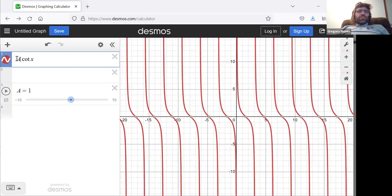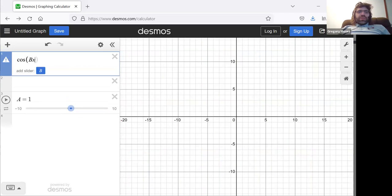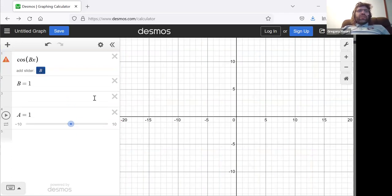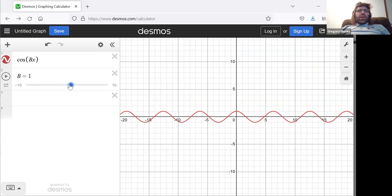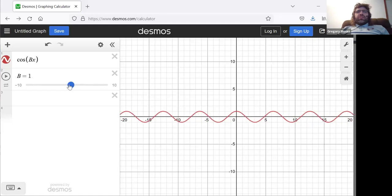Similarly, if we have the sine or the cosine, we've seen what happens if we have a B there. That B controls the period, which, speaking graphically, either smooshes the graph horizontally like an accordion or stretches it horizontally like a spring.